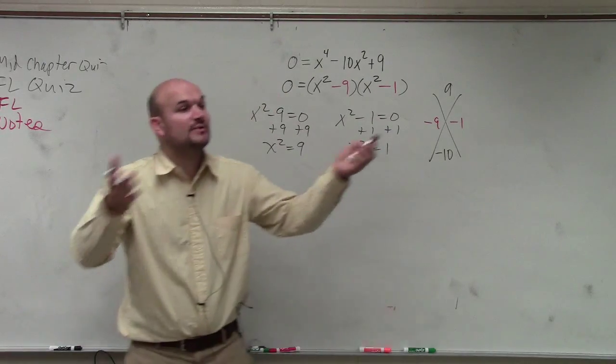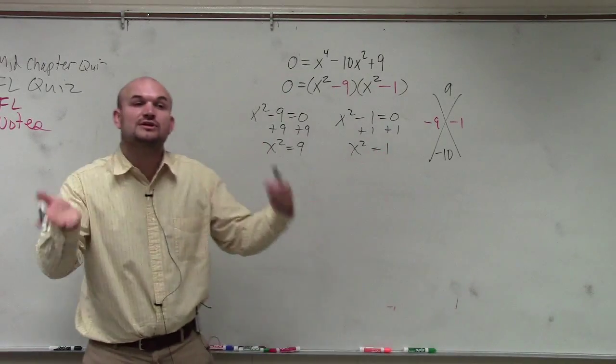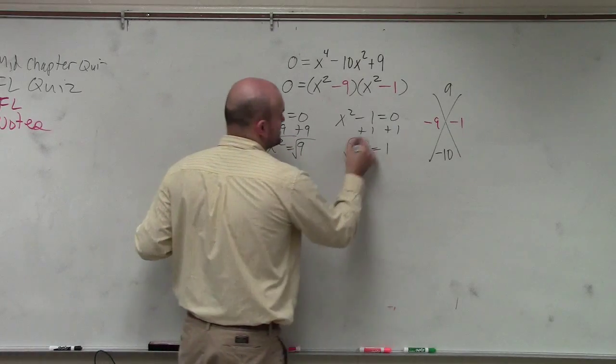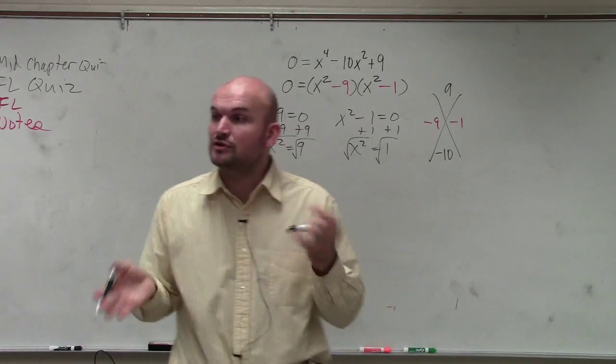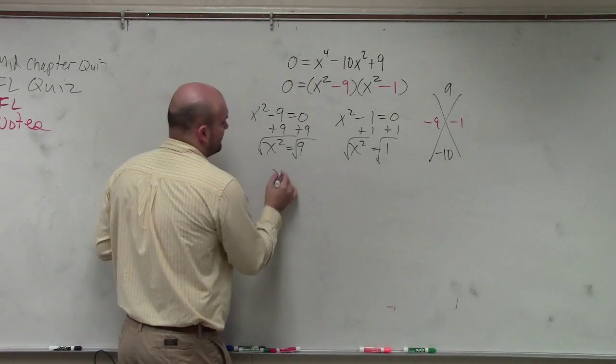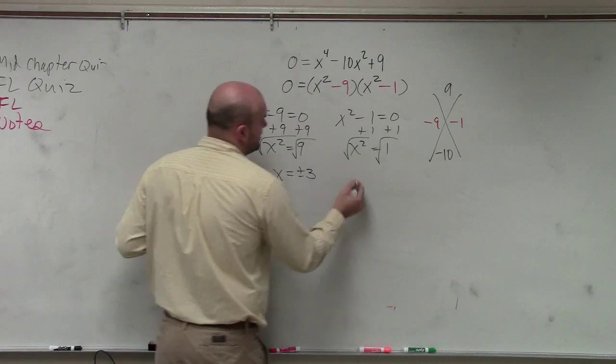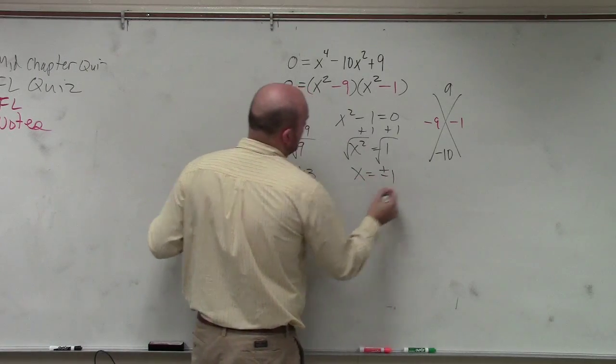Now, to undo squaring, just like we undid the cubing by taking the cube root. To undo squaring, we take the square root of both sides. Just remember, though, when we're taking the even root of a number, we have to include the positive and the negative. So therefore, x equals plus or minus 3. x equals plus or minus 1.